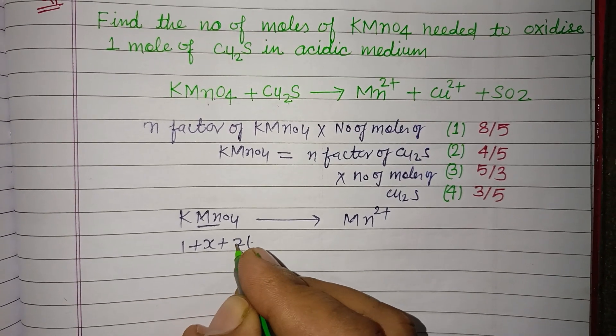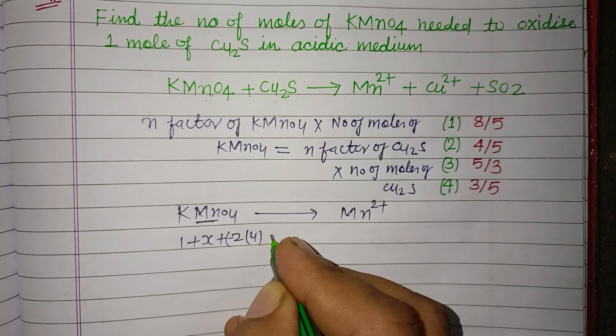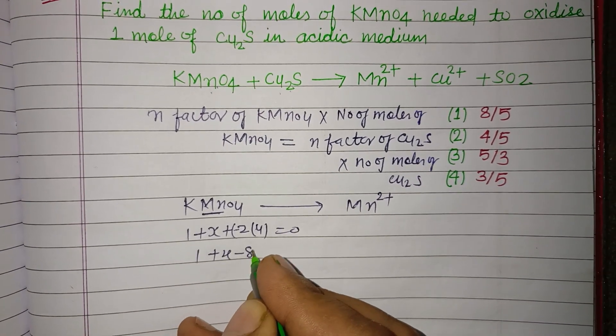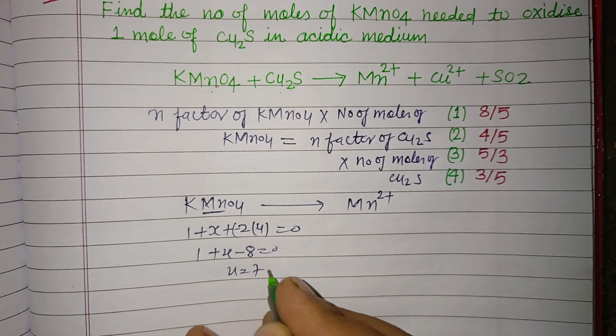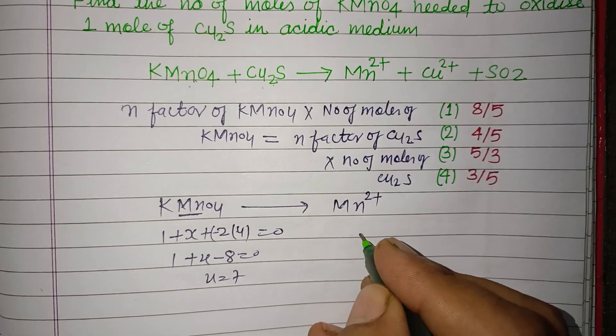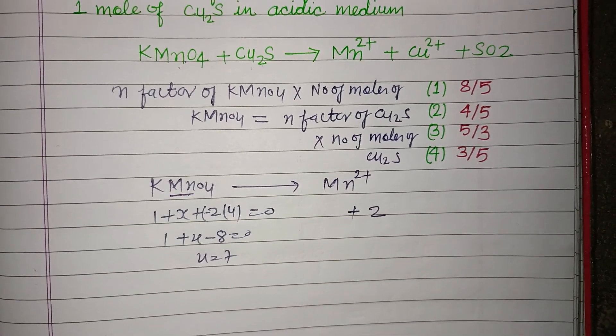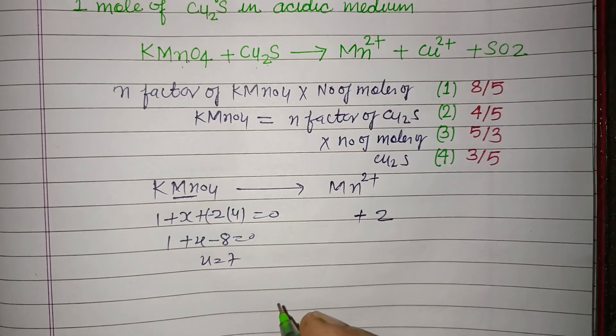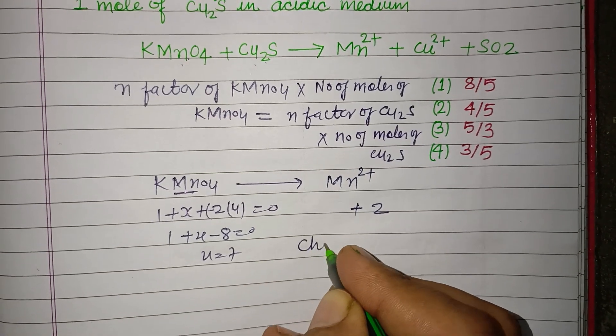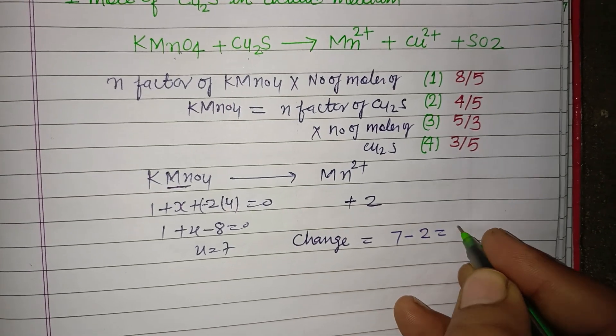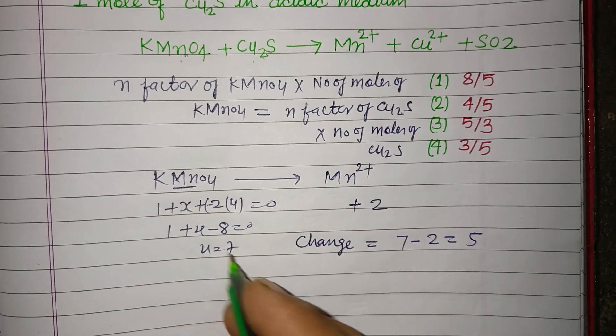1 + x + 2(-2)(4) = 0, so 1 + x - 8 = 0, thus x = 7. In Mn²⁺, it's +2. Therefore, the change is